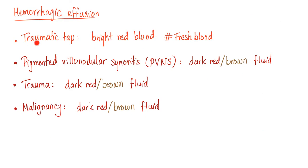Back to the hemorrhagic effusion. In case of traumatic tap, there is bright red blood — it's called fresh blood. Pigmented villonodular synovitis is dark red to brown. Trauma is dark red. Malignancy is dark red.